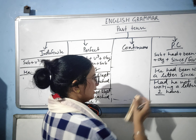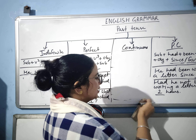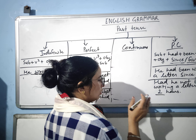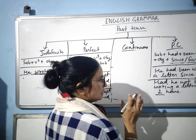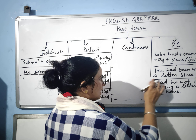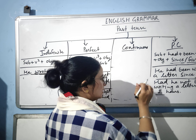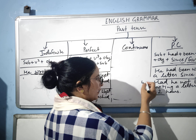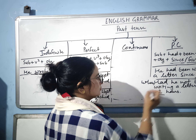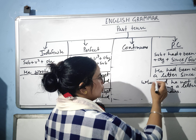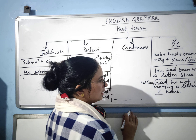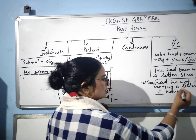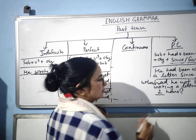In the second type of interrogative, use the WH word already present in the Hindi sentence at the beginning. For example, using 'when': 'When had he not been writing a letter for 2 hours?' Then a question mark.